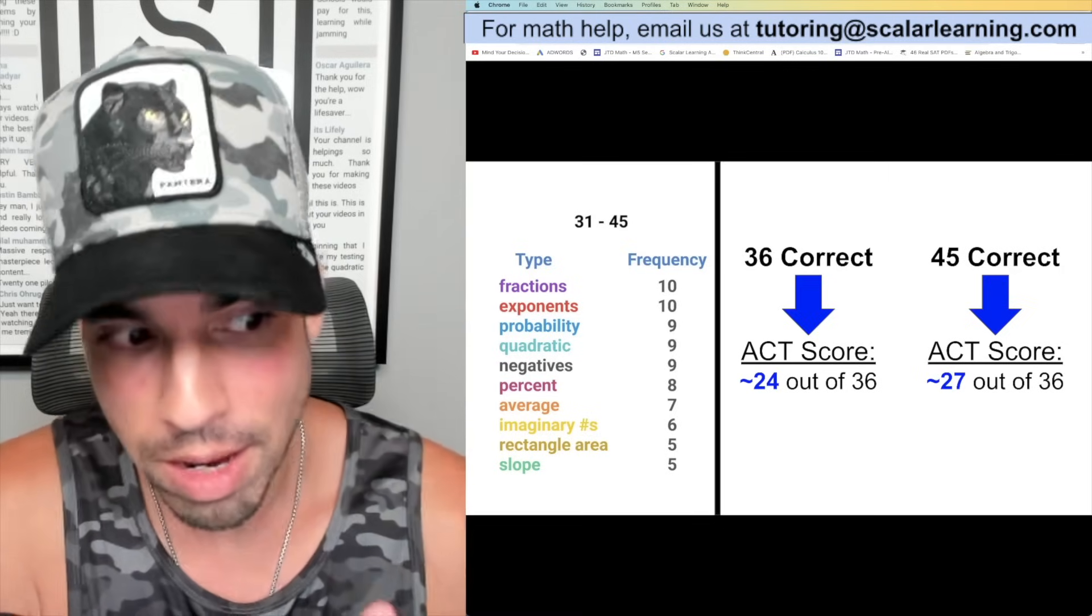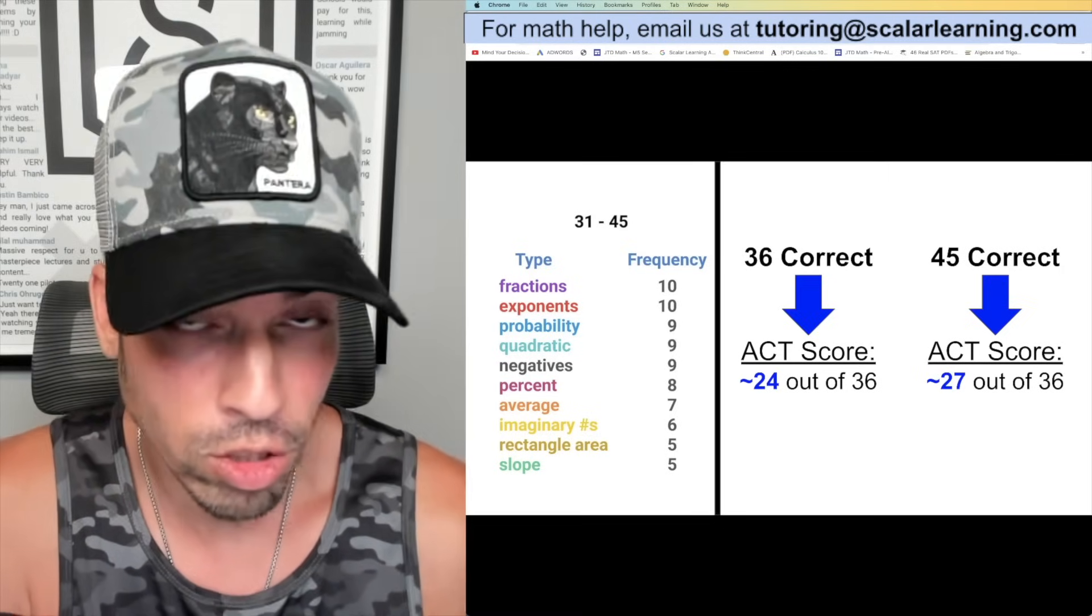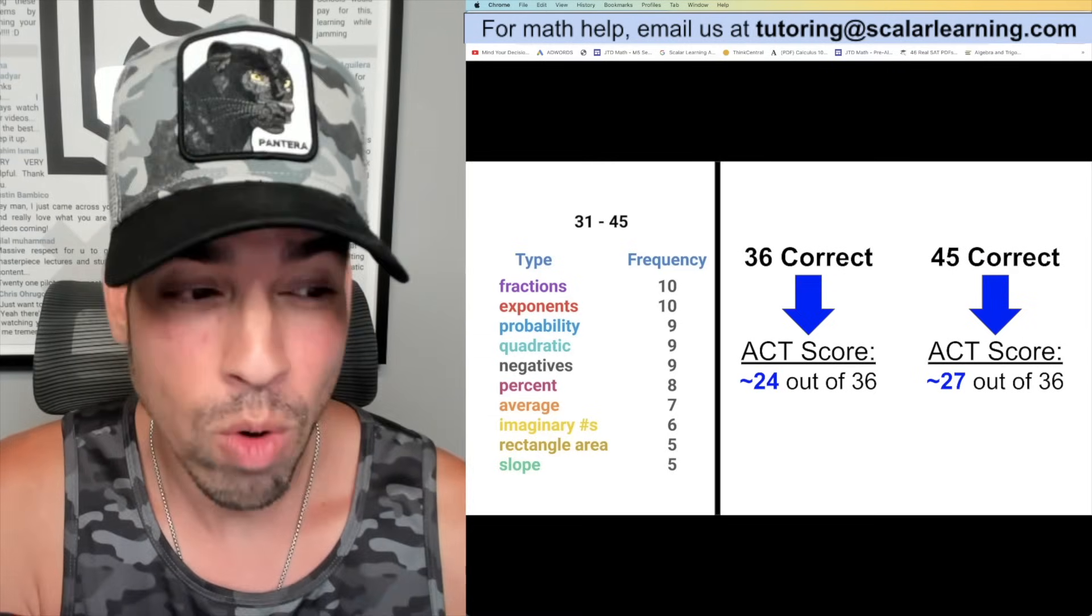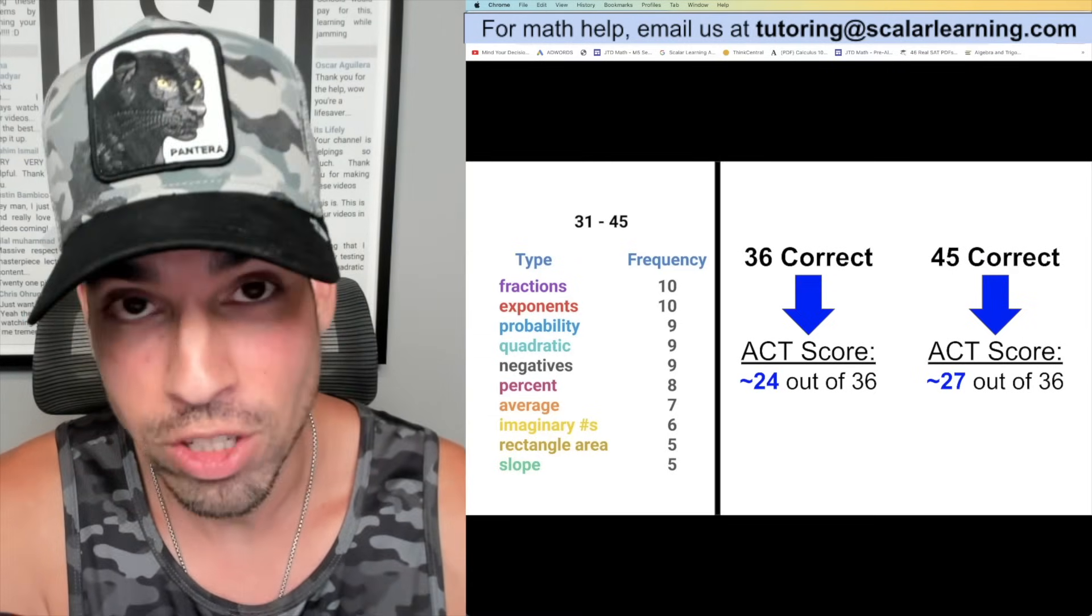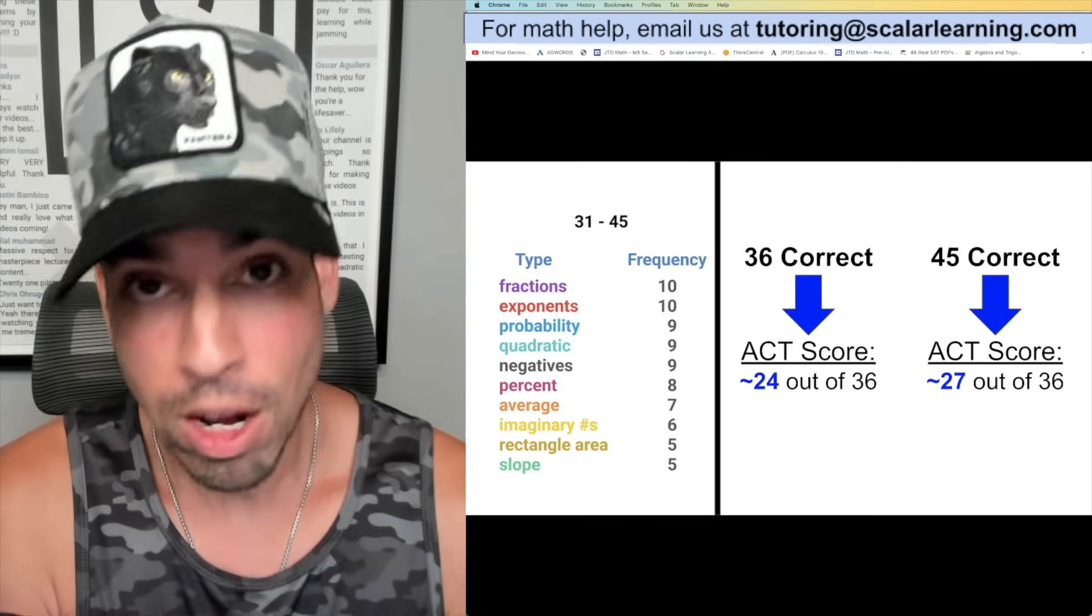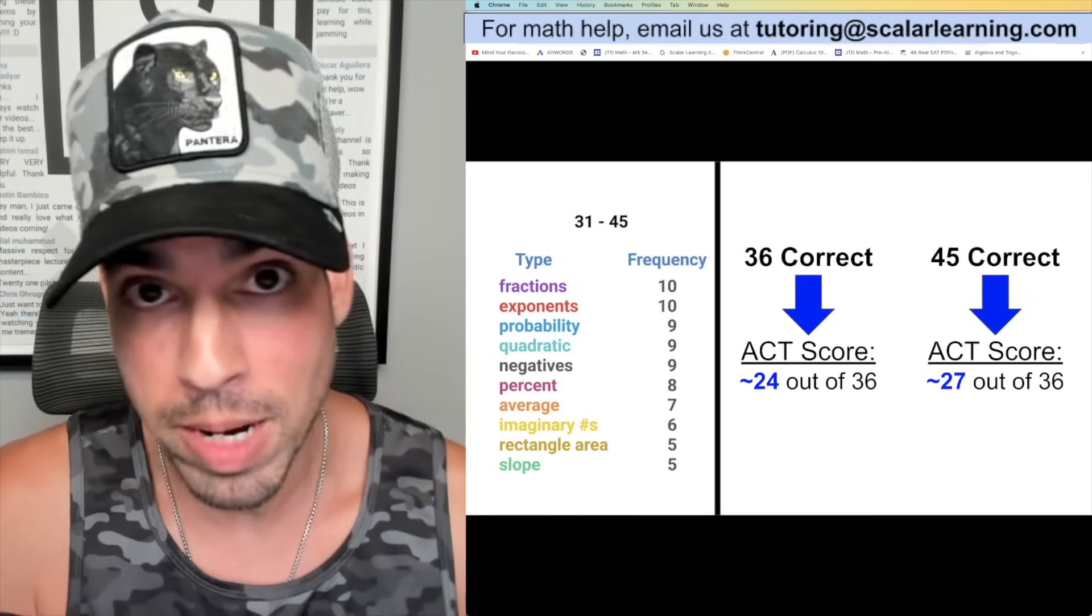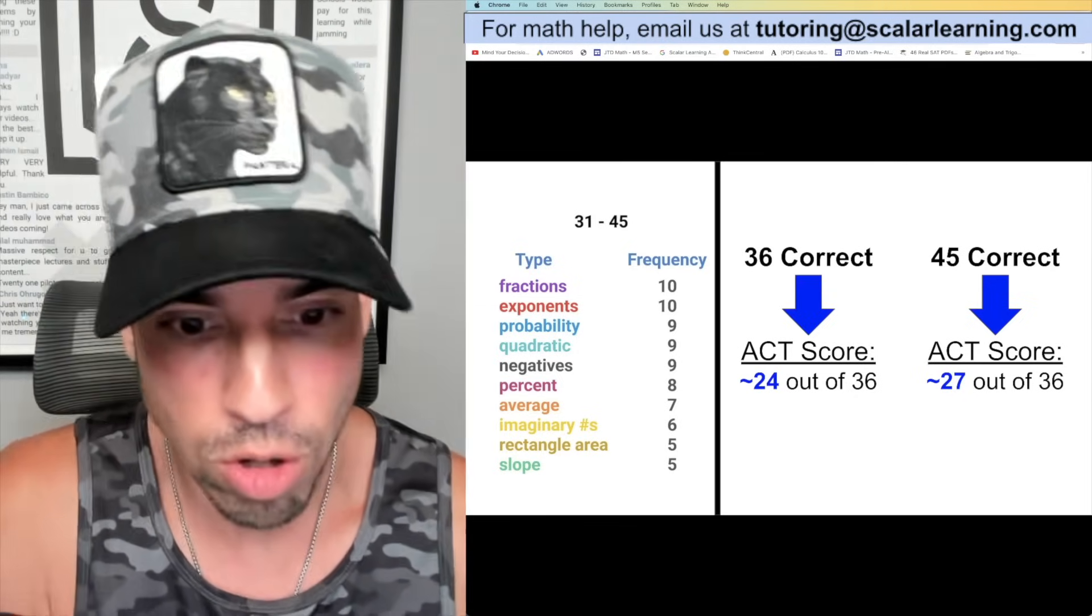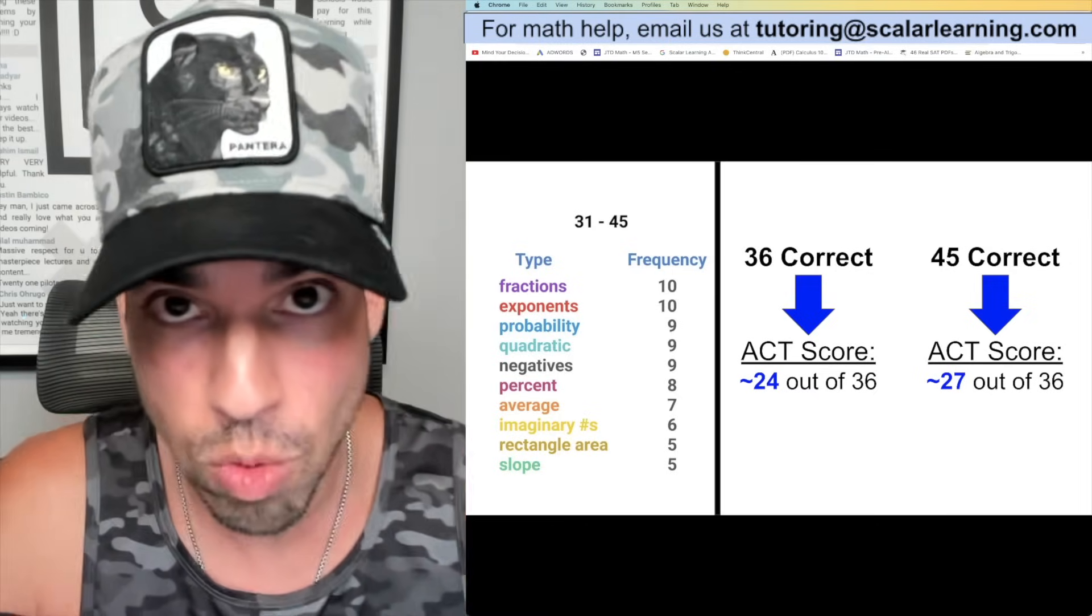We see quadratics - a big piece of the ACT. Quadratics are x squared equations, the parabolas. Understanding quadratics, understanding factoring, understanding how to graph a parabola in different formats - these are the things that I would focus on if you're targeting somewhere in that 24 to 27 score.